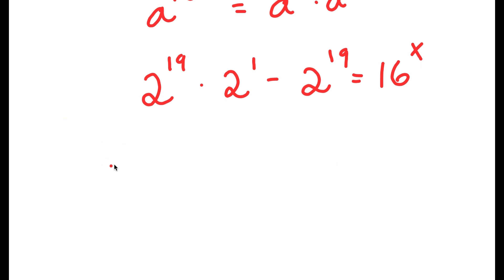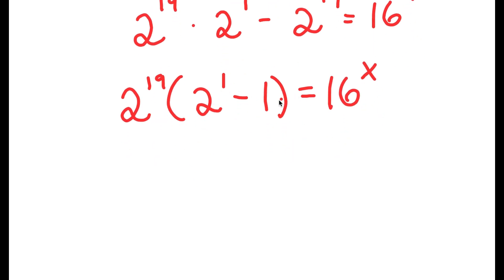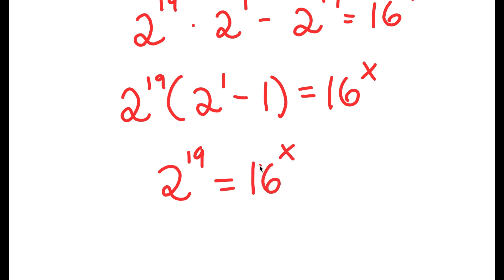From here, if I factor out 2 to the power of 19 from my left-hand side, I get 2 to the power of 19 times (2 to the power of 1 minus 1) is equal to 16 to the power of x. And 2 to the power of 1 minus 1 is simply equal to 1, and anything times 1 is itself. So I have 2 to the power of 19 is equal to 16 to the power of x.